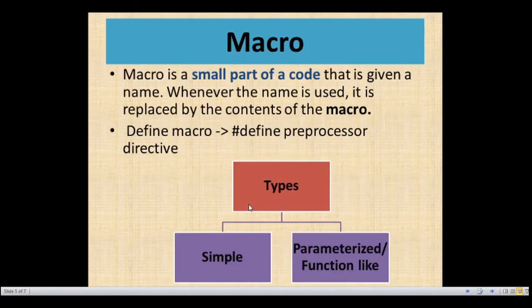What is actually a macro? A macro is a small part of code that is given a name. Whenever the name is used in your program, the code is called. Macro is a small part of code — whenever the name is used, it is replaced by the contents of that macro, and at that time this line is executed.